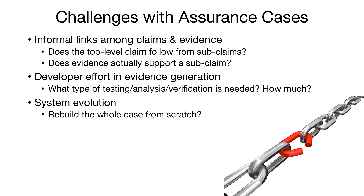There are a number of challenges to making assurance cases more widespread in practice. First, the argument in an assurance case is typically written informally using natural language, and this can make the links between the claims and evidence unclear and ambiguous at times. It also makes it hard to check the soundness of the argument. Second, it takes a lot of effort for developers to generate the evidence needed to support the argument. And lastly, if the assurance case is constructed manually, then whenever the system changes, we may have to rebuild the entire case, including regenerating all of the evidence needed to support it.